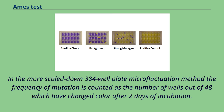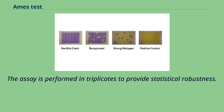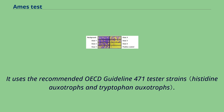In the more scaled-down 384-well plate microfluctuation method, the frequency of mutation is counted as the number of wells out of 48 which have changed color after 2 days of incubation. A test sample is assayed across 6 dose levels with concurrent zero-dose and positive controls, all fitting into one 384-well plate. The assay is performed in triplicates to provide statistical robustness, and it uses the recommended OECD guideline 471 tester strains.